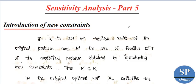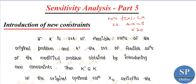Suppose we have an LPP: minimize f of x equal to cx, subject to the constraints Ax equal to b and x equal to 0. The case here is the introduction of new constraint equations after obtaining the optimization.